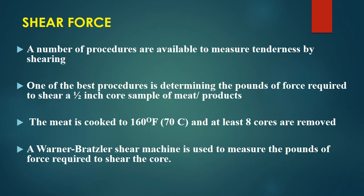A number of procedures are available to measure tenderness by shearing. One of the best procedures is determining the pounds of force required to shear a half-inch core sample of meat or product. The meat is first cooked to 160 degrees Fahrenheit, and at least eight cores are removed as samples. The most common machine used is called the Warner-Bratzler shear force machine. This machine measures the pounds of force required to shear the core, recorded from a scale on the machine.